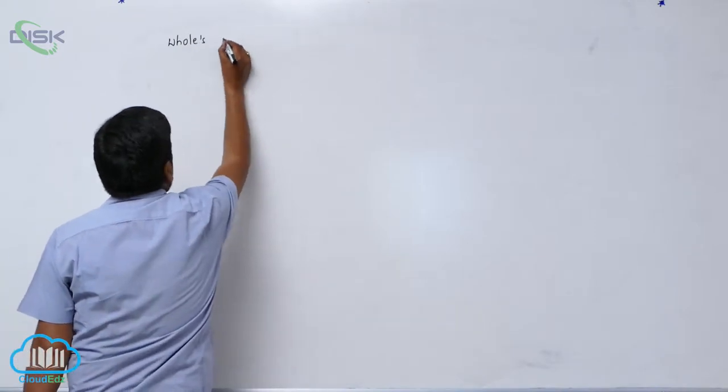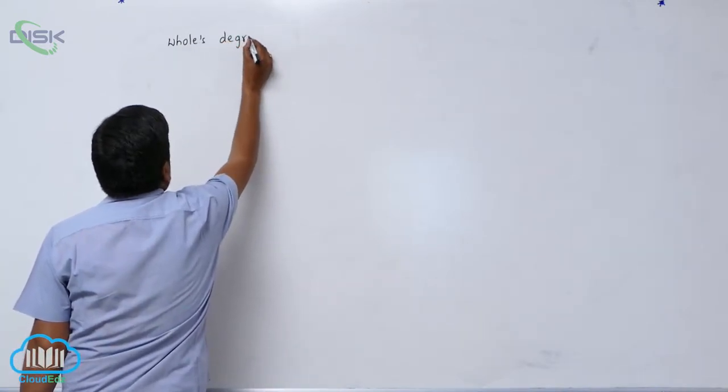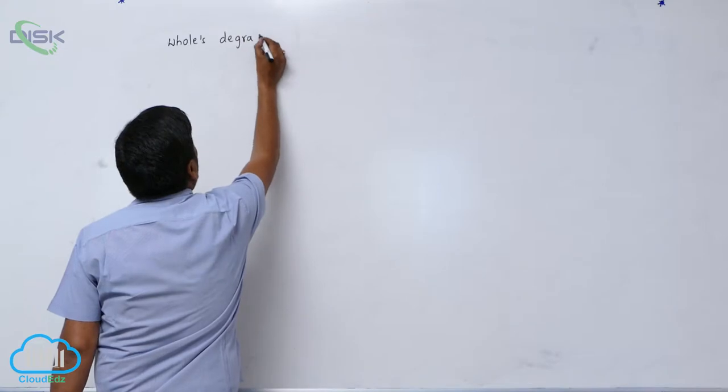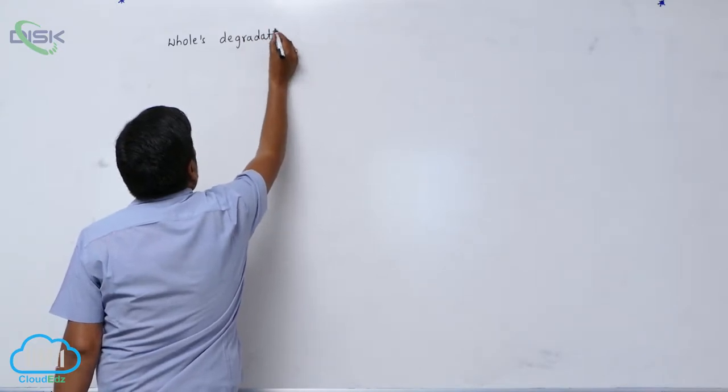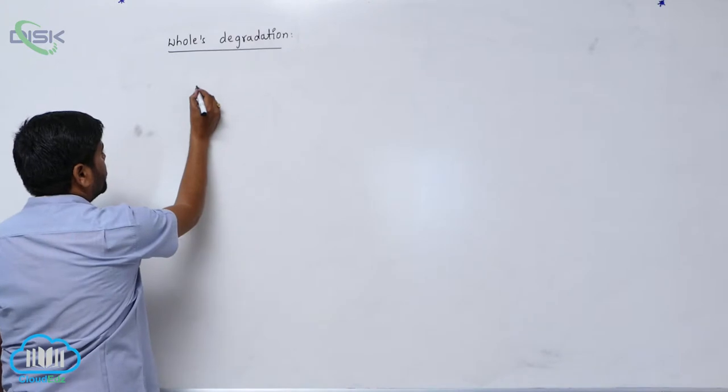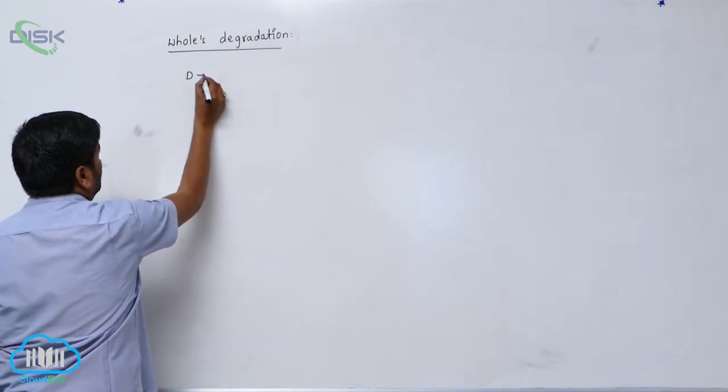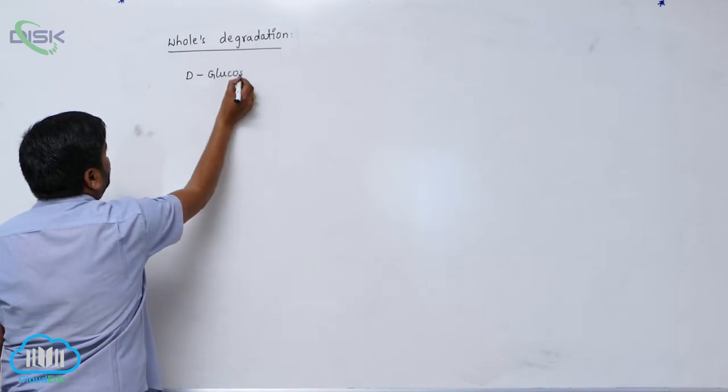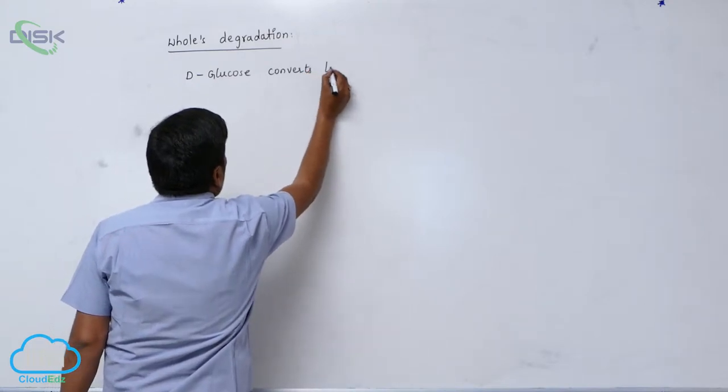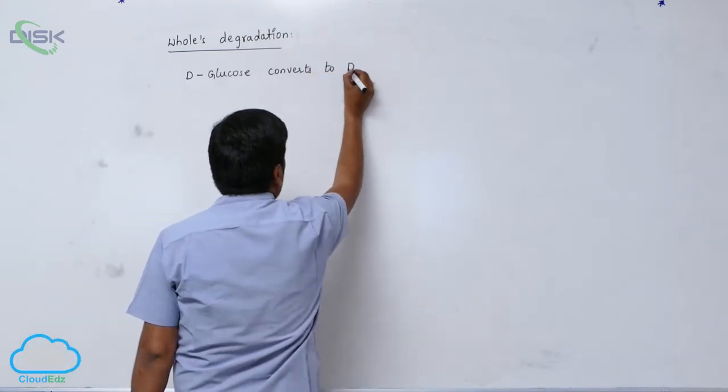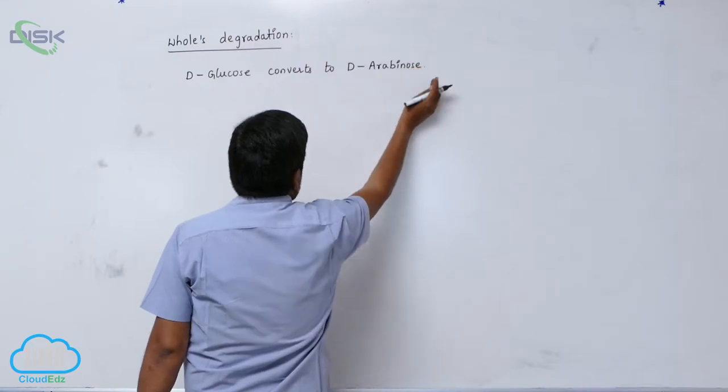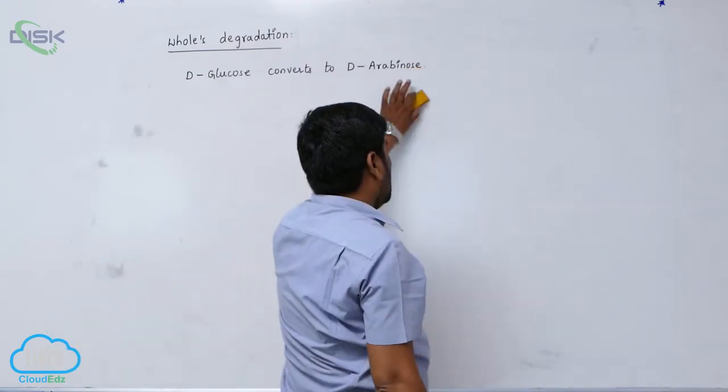Ohl's degradation. D-glucose converts into D-arabinose. D-glucose converts into what? D-arabinose.